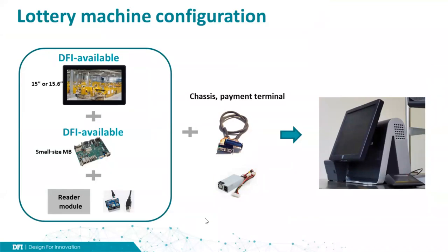If we look into a lottery post machine, there are some key parts. The first part is a 15 or 16 inch touch panel module. The second part is a small-size main board. The third part is a relatively complicated reader module, which includes a motor, a reader board, a CS module, and sometimes a buckle scanner.